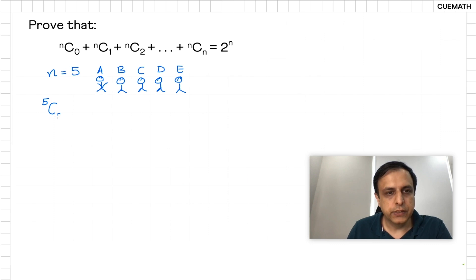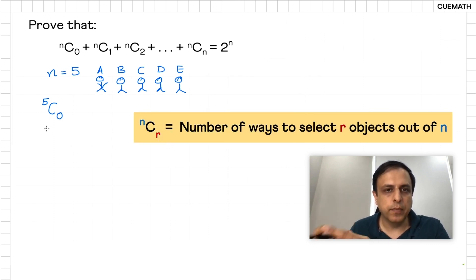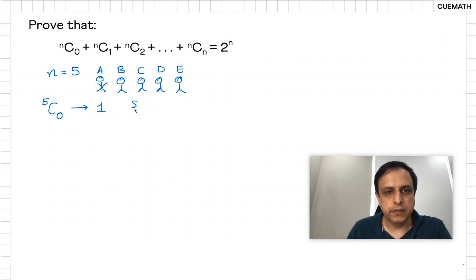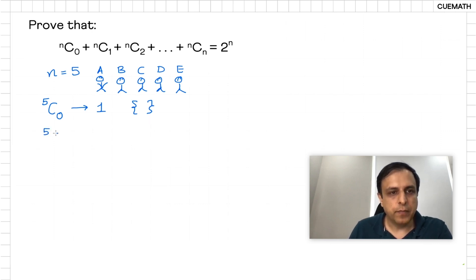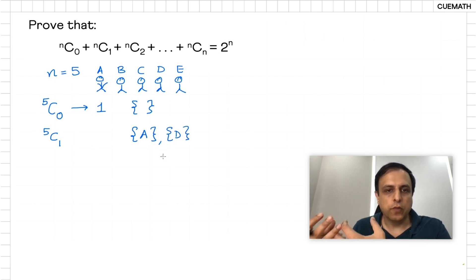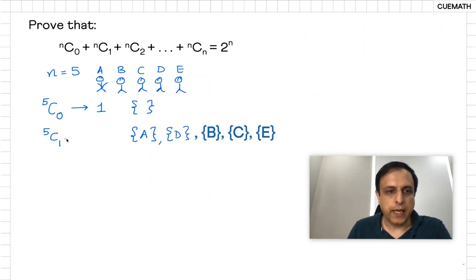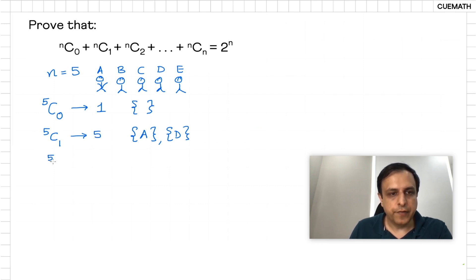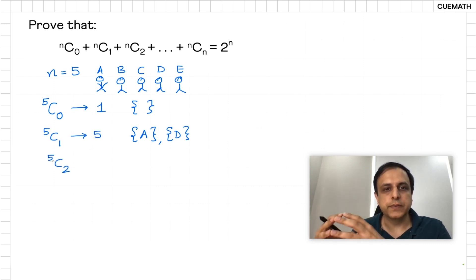5C0 means the number of ways of selecting 0 people out of 5, or the number of subsets with 0 people. That is simply 1, because there's just one such subset — the empty set. 5C1 means the number of subsets with 1 person. For example, just Adam, or just Dan. All of these are subsets of size 1, and there are 5 such subsets. 5C2 means the number of subsets of size 2.